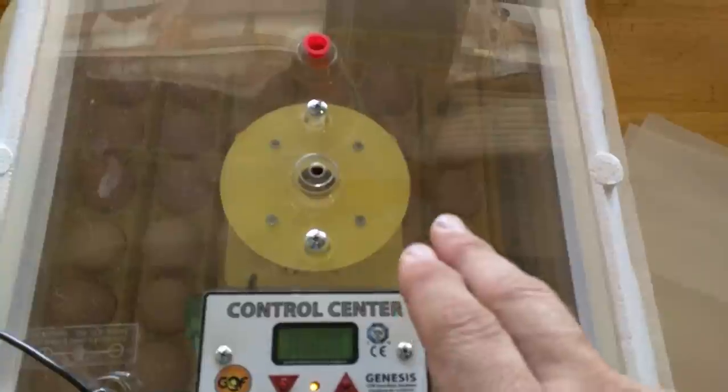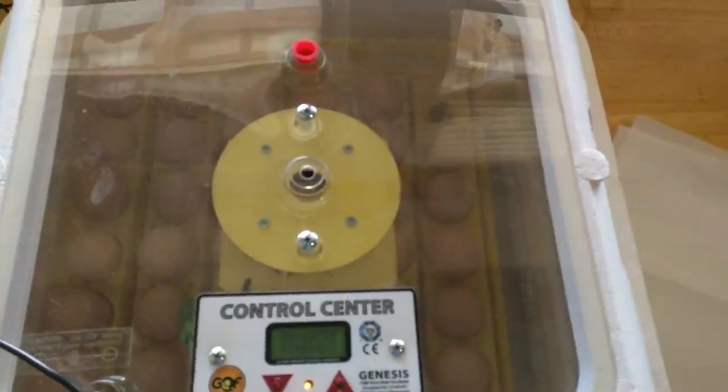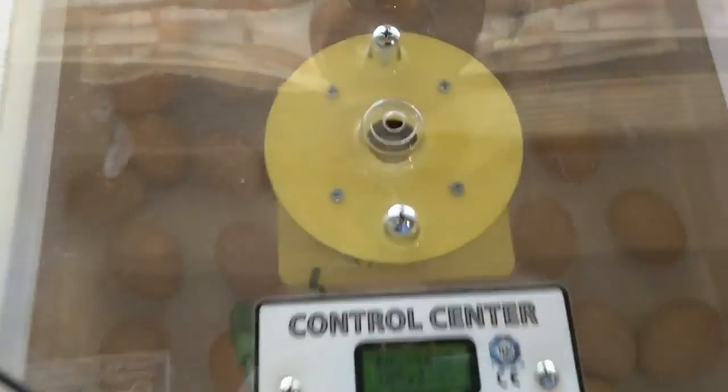If you have an auto turner, you put them on and you don't turn them anymore. That's it. You can see the egg turner right there is out. I just put them in there.